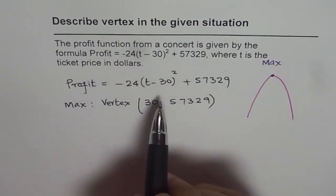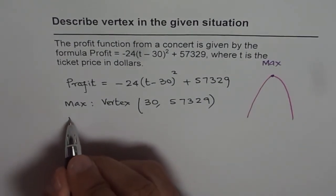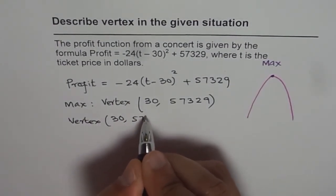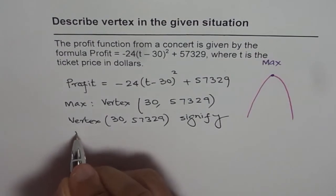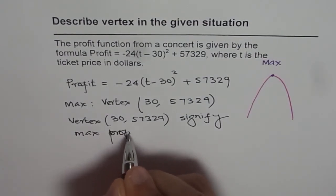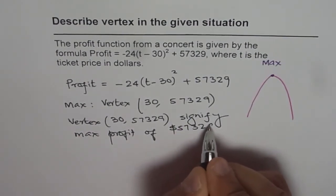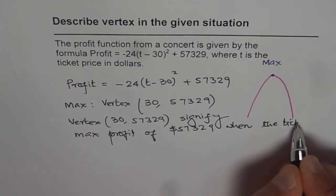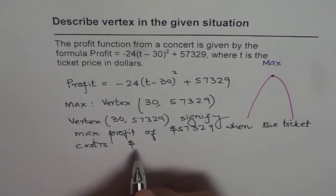So what will this vertex (30, 57329) signify? So that is what you need to write here, right? So what we can say is that the vertex (30, 57329) signifies maximum profit of $57329 when the ticket cost is $30.